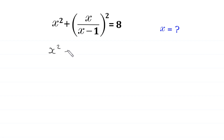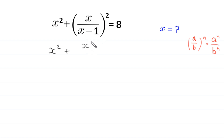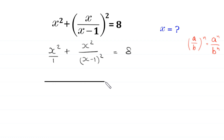By using the power rule — a over b, whole to the power n, is equal to a to the power n divided by b to the power n — this x over (x minus 1), whole squared, will become x squared divided by (x minus 1) whole squared, is equal to 8.